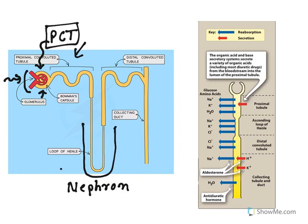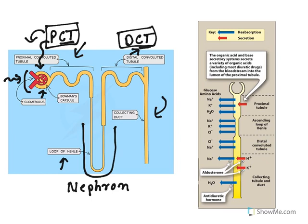After the proximal convoluted tubule, there is a hairpin bend-like structure known as the loop of Henle. Then there is another convolution called the distal convoluted tubule — 'distal' meaning far away from Bowman's capsule. Finally, the last zone is known as the collecting duct. These are the major functional areas of a nephron.